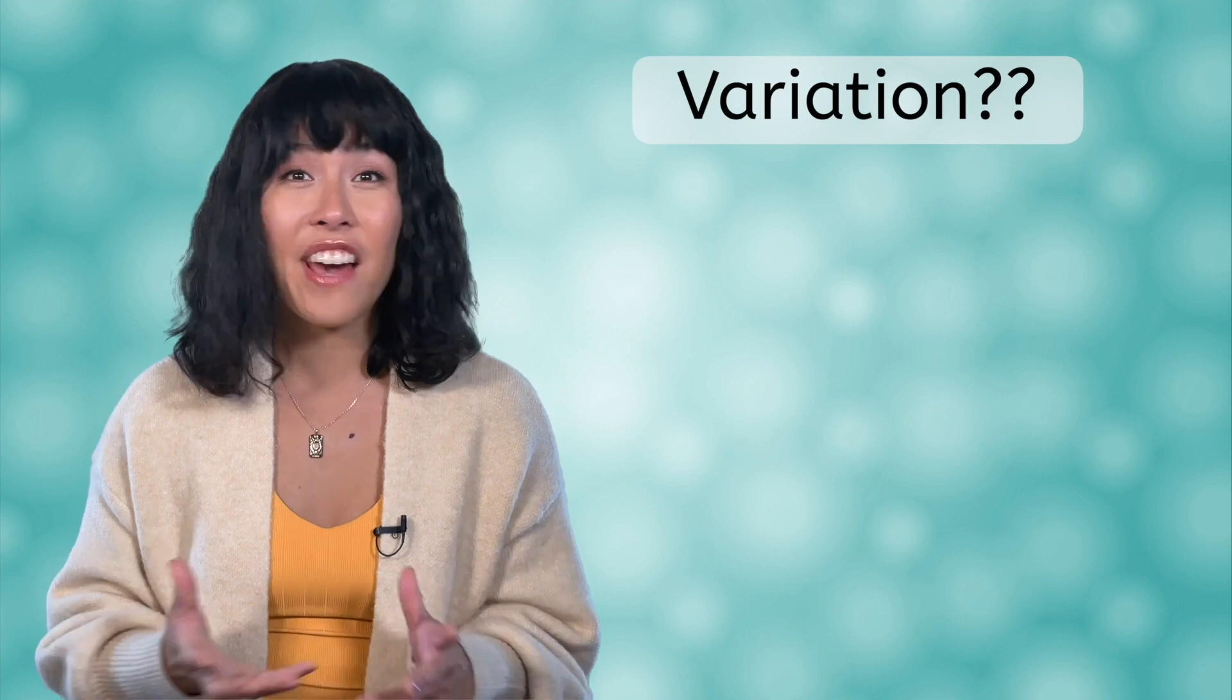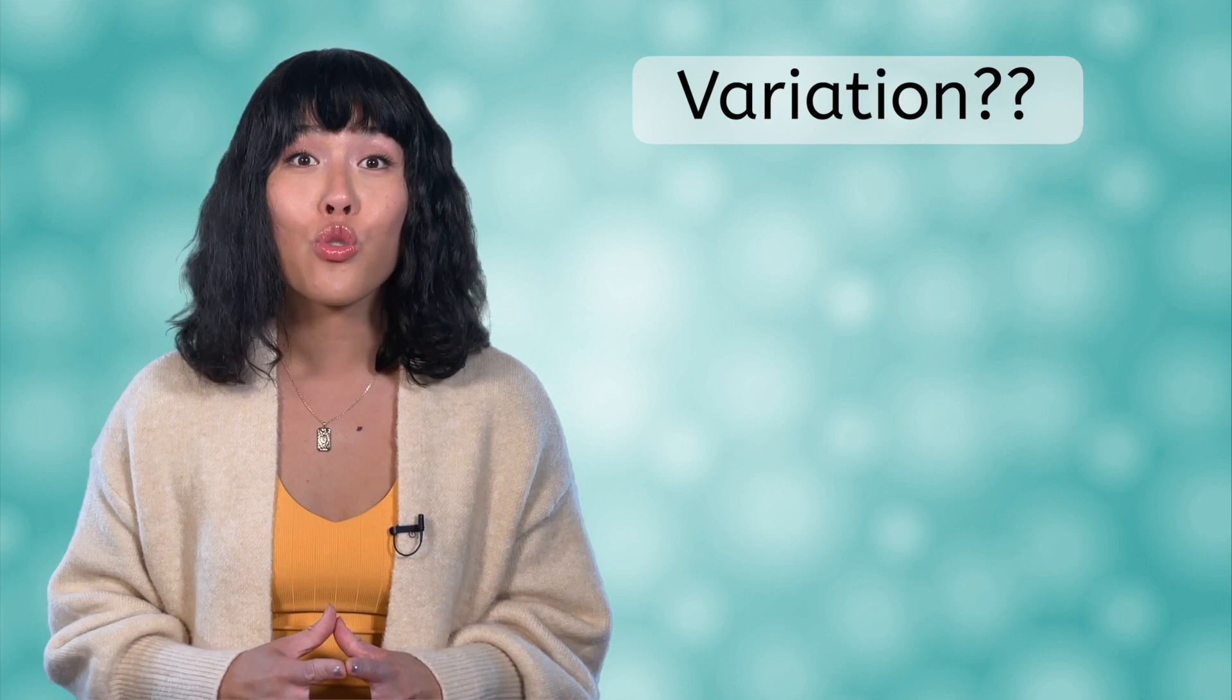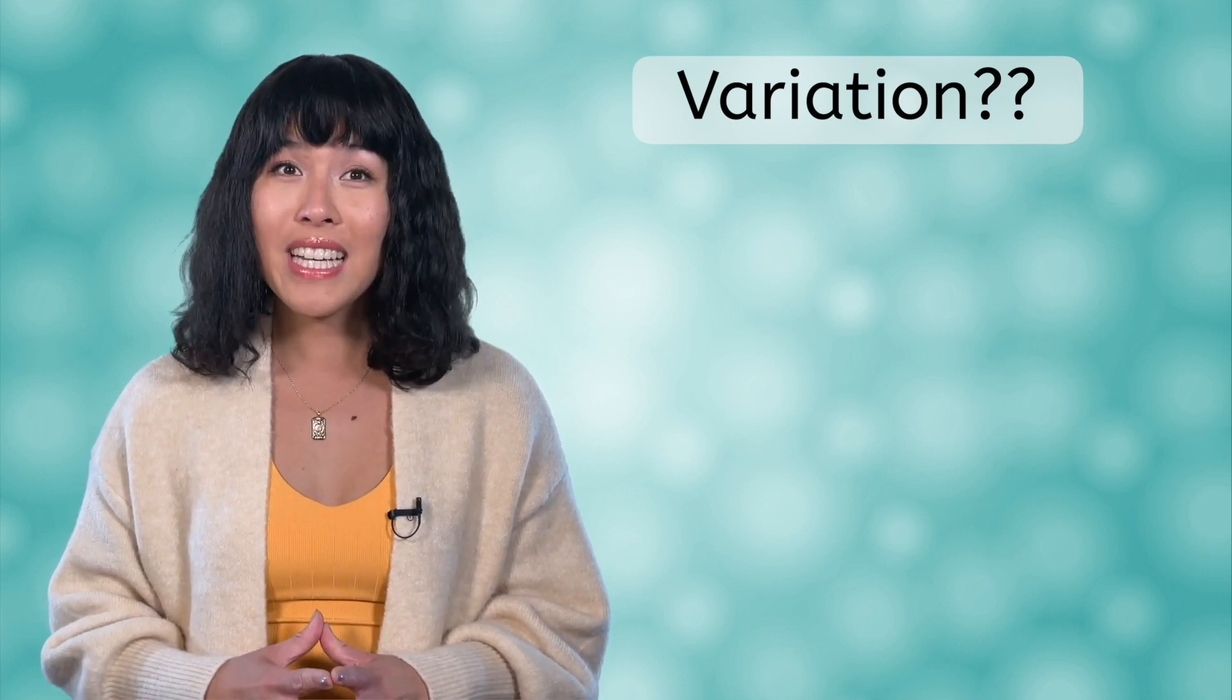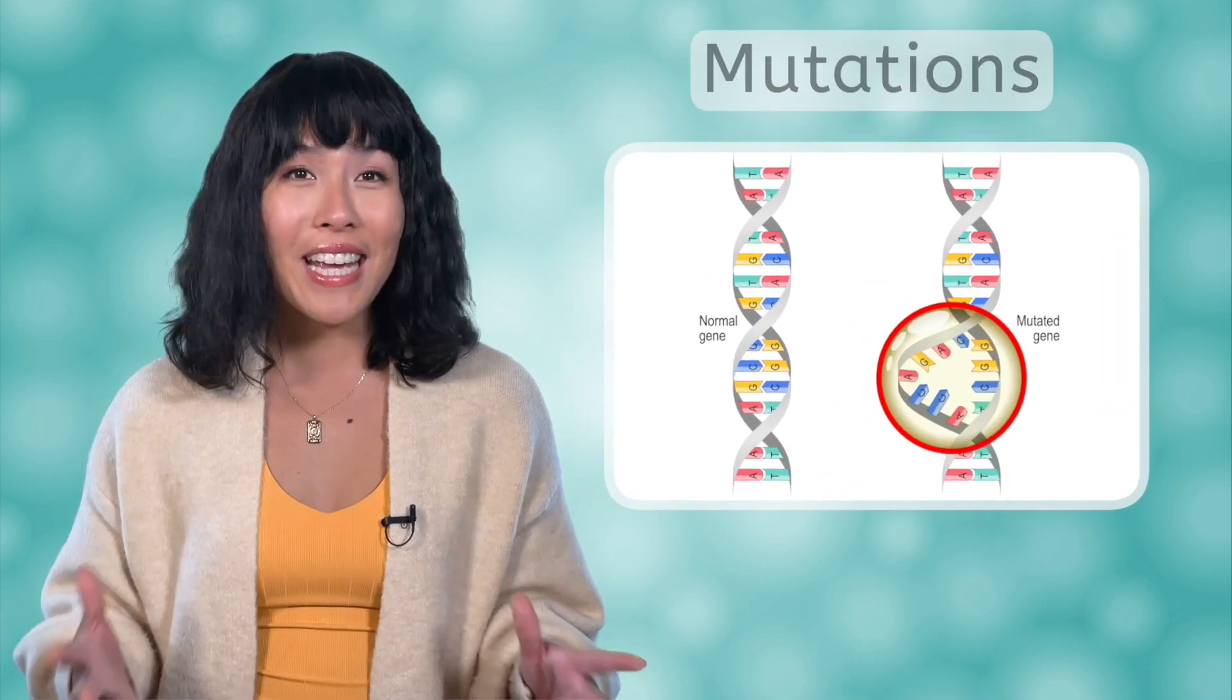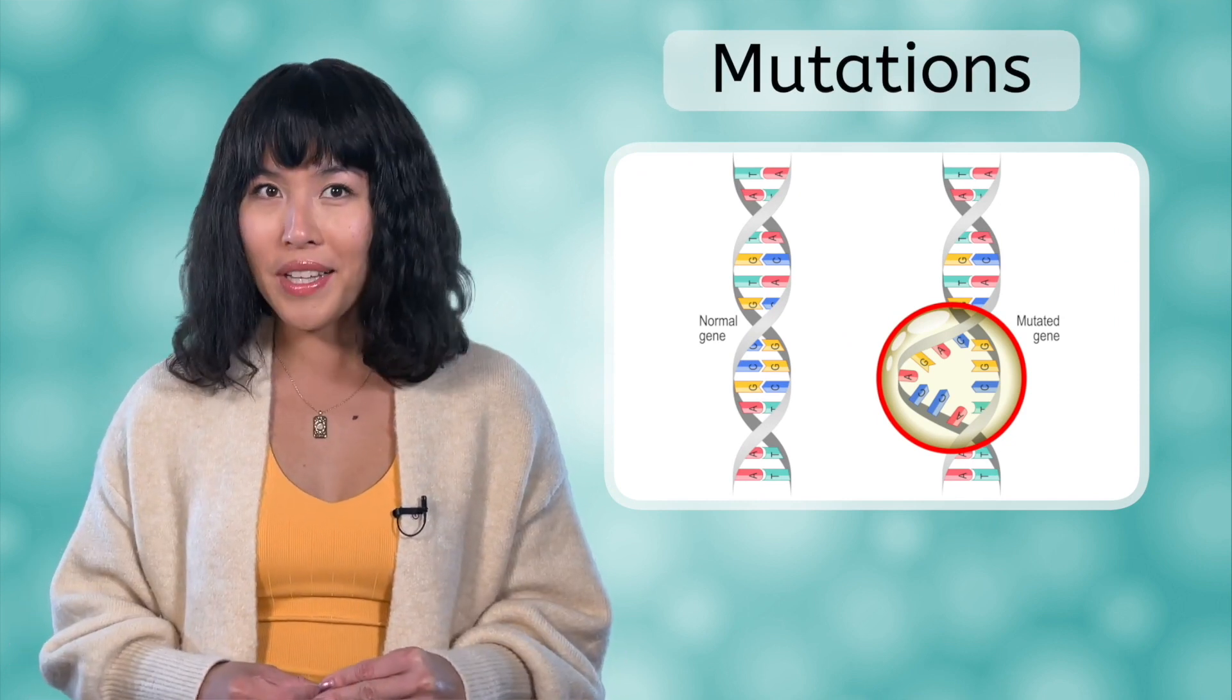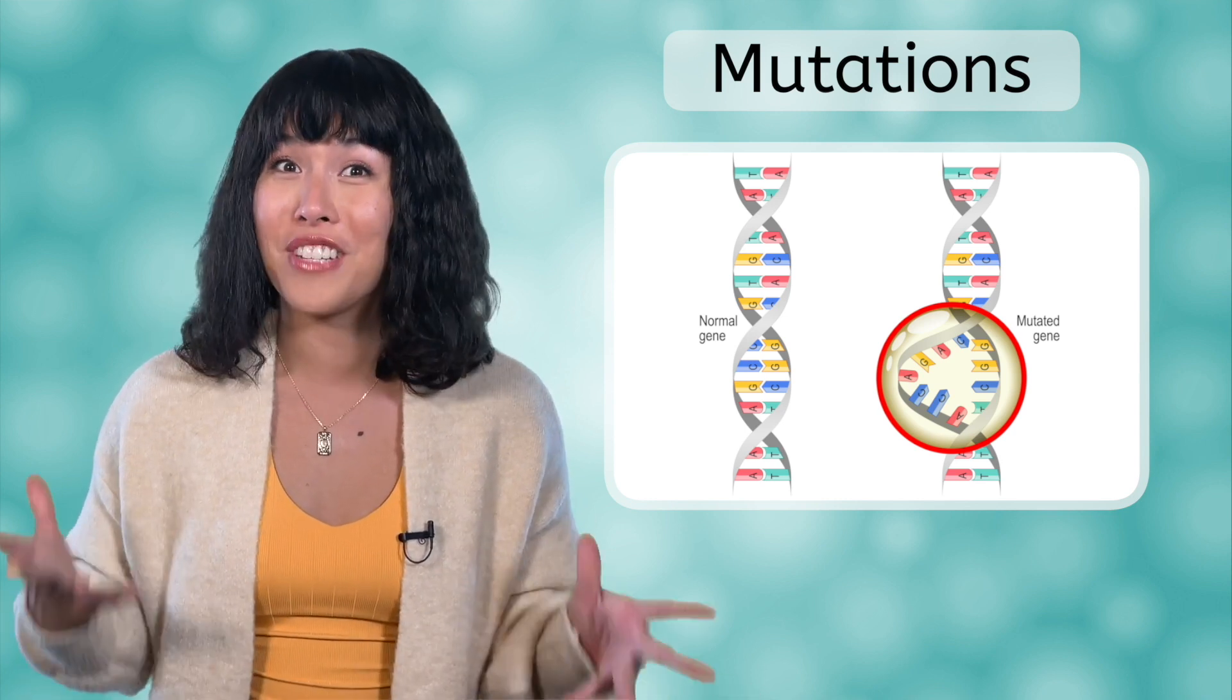But if bacteria only reproduce by making exact copies of themselves, how is variation ever introduced into bacterial populations? We know that variation is crucial to the long-term survival of a species. Bacteria can achieve variation in two ways. The first you already know about: mutations. Because they reproduce and make new generations so quickly, mutations can arise and spread through a population in a matter of days.